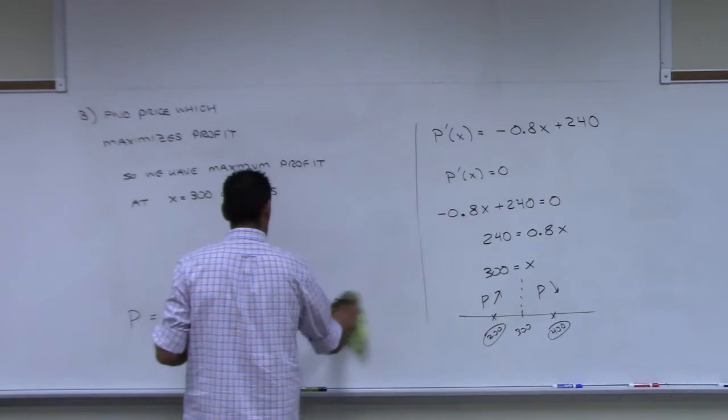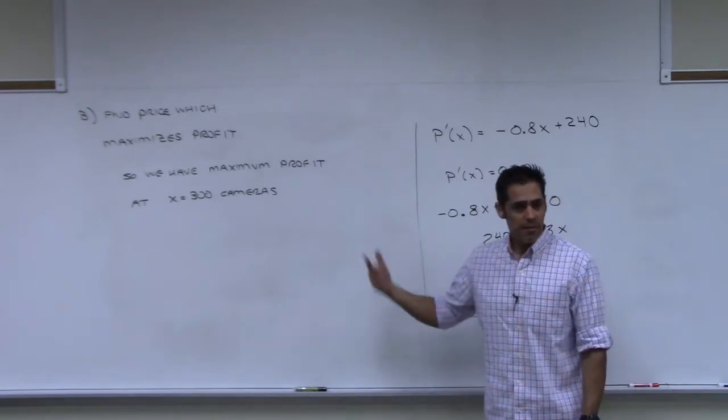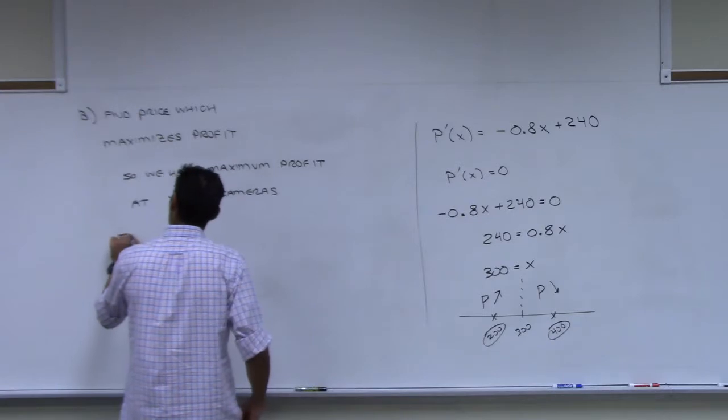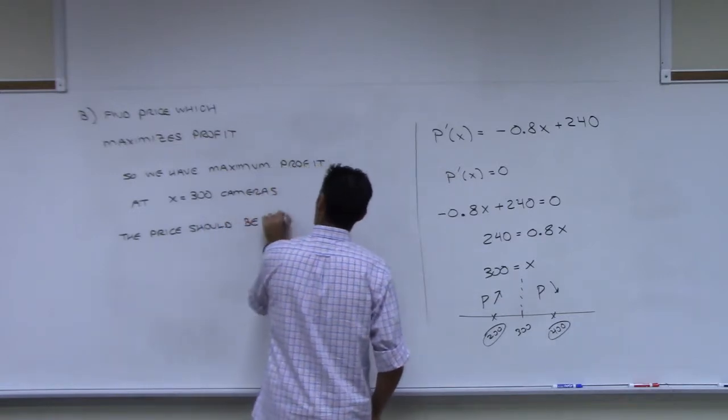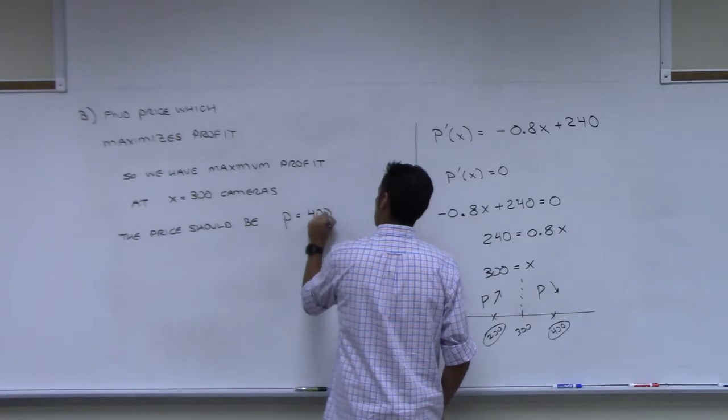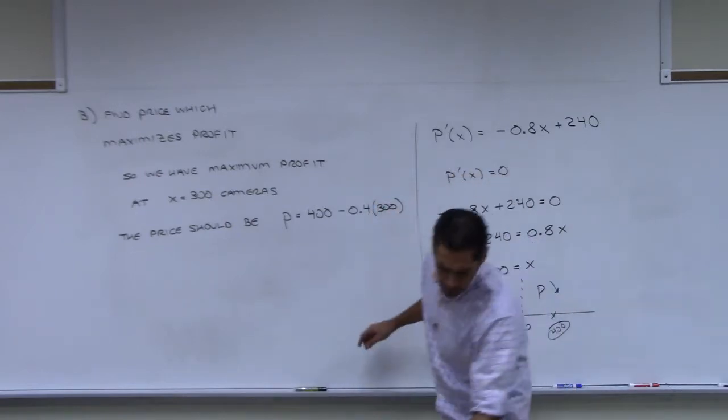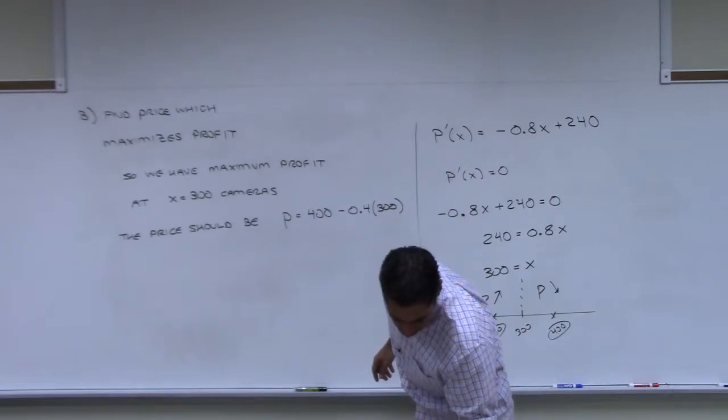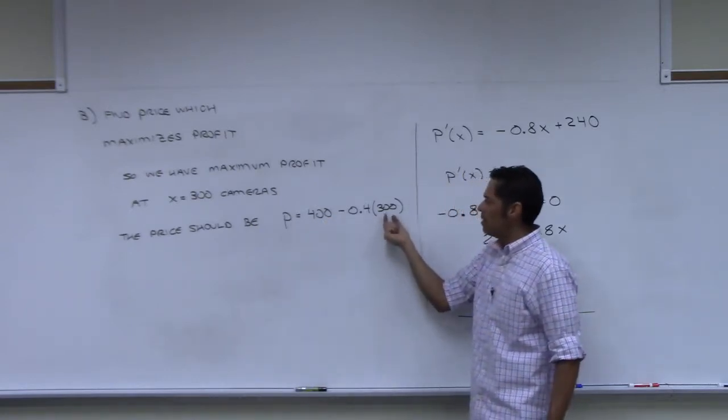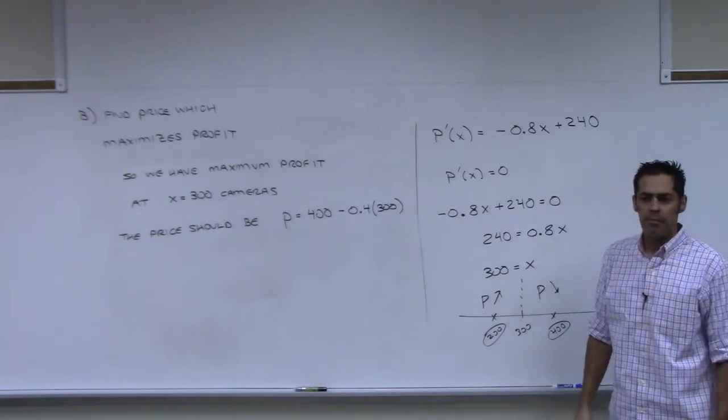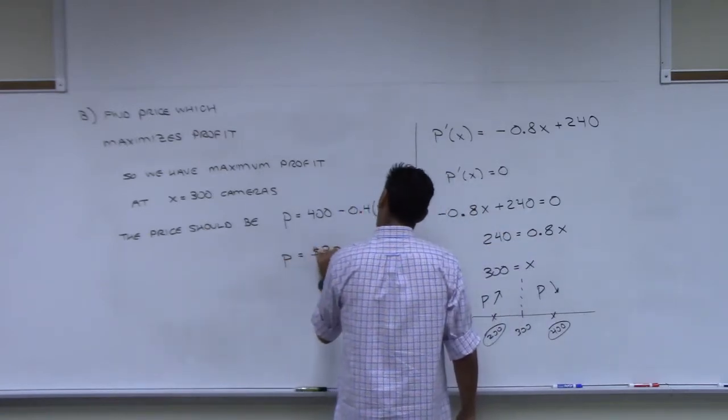Have I answered the question? No, because the question is saying, what should the price be to maximize profit? So now I need to figure out what the price is. The price should be P equals, what was it? 400 minus 0.4x, which is 300. Right? Our price demand equation was this. So my price will be equal to this. I plug in 300. And what do you get? 280?